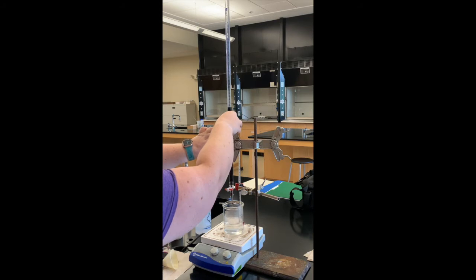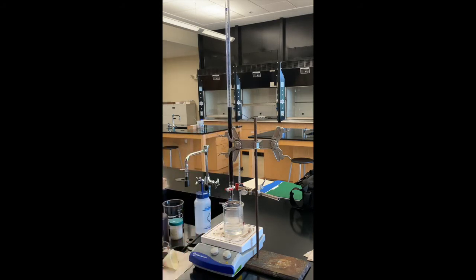So the titration is going to go the same as it did in Part B. We're still looking for that color change. The only thing that's changed is our sample that we dissolved in the acid is now an unknown. So you're going to figure out how much oxalate is in that.